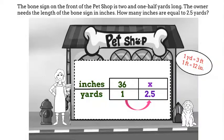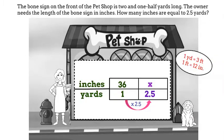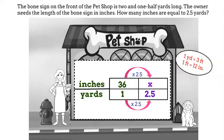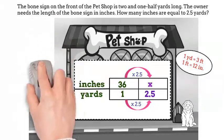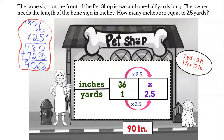Now think — what can we multiply 1 by to get 2.5? That's right, 2.5. We'll do the same thing to the numerator and we'll have our answer. Use pencil and paper to calculate 36 times 2.5. What did you get? That's right, it's 90. The bone sign is 90 inches long.